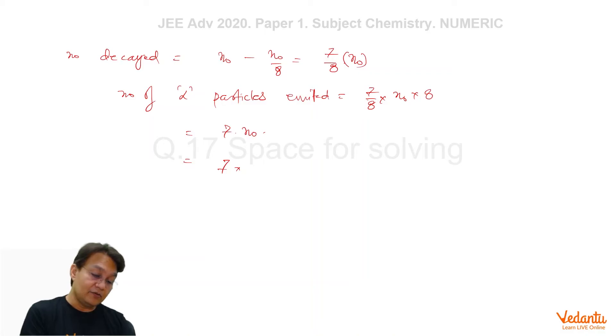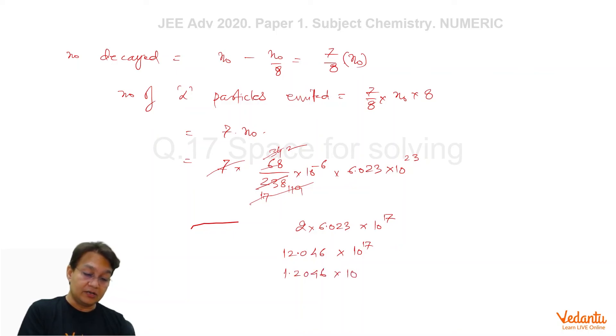7 into, as you can see, the value of N0 was 68 upon 238 × 10^-6 × 6.023 × 10^23. So upon solving, you can see the clear factors here, 34, 4, 119. This is 17 and this is 2. So you are going to get 2 × 6.023 × 10^17, which is 12.046 × 10^17. And you can represent it as 1.2046 × 10^18.